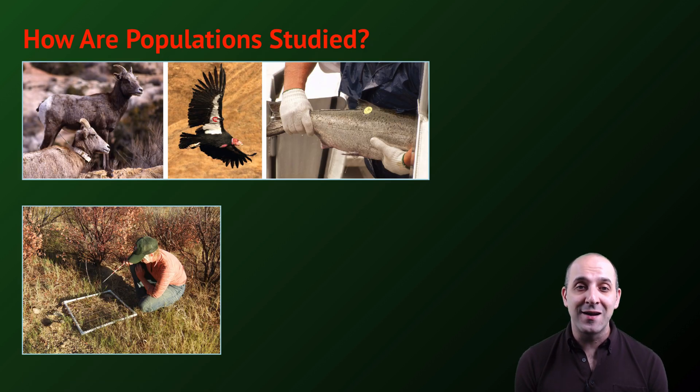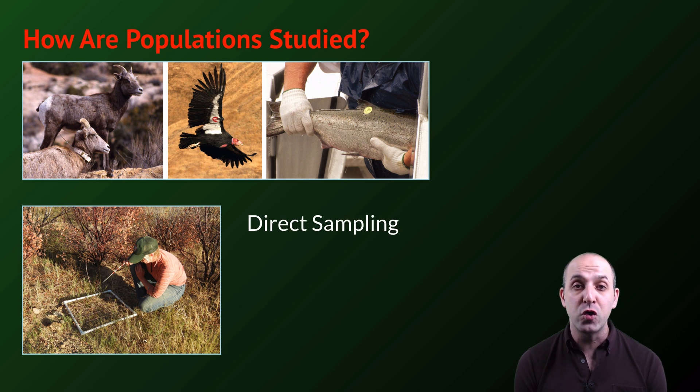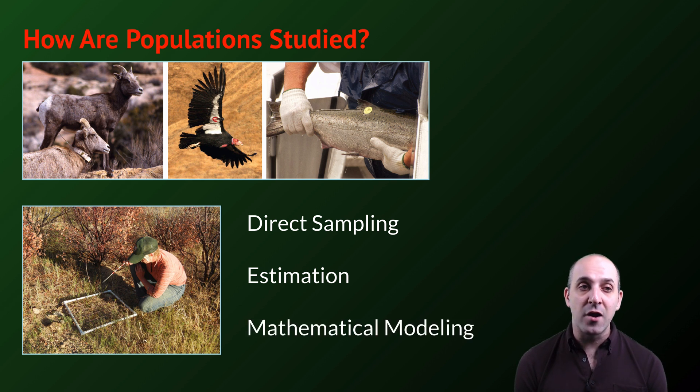In terms of actually studying real-world populations, we do need to go out and collect data. And that can be done through direct sampling, by going into an environment and counting the number of individuals in the population, or by using tools to estimate the number of individuals based on the number of individuals that we observe. But we can also use mathematical modeling to study real-world populations based on the data that we take from the environment and our larger theoretical understandings of population growth. All of these processes are used by population biologists when studying populations.